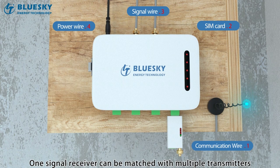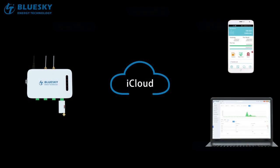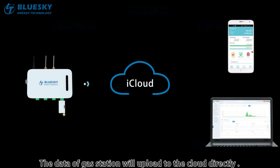One signal receiver can be matched with multiple transmitters. The data of the gas station will be uploaded to the cloud directly, and the owner can check the real data via the website and mobile app directly.